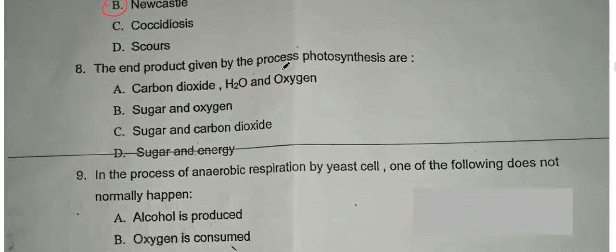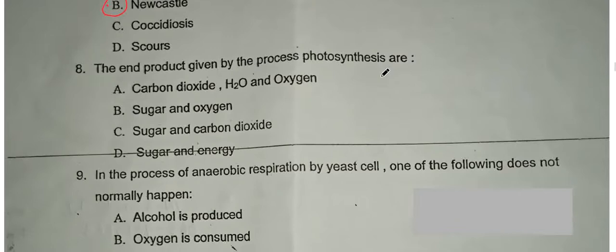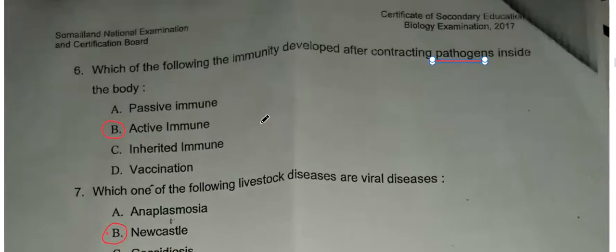The end products of photosynthesis: carbon dioxide and water are the inputs, along with light energy. The outputs are glucose (sugar) and oxygen. Photosynthesis uses carbon dioxide and light energy to produce glucose and oxygen.